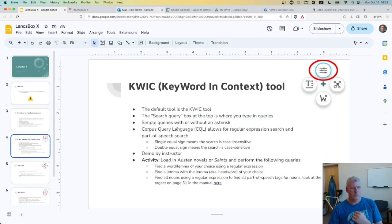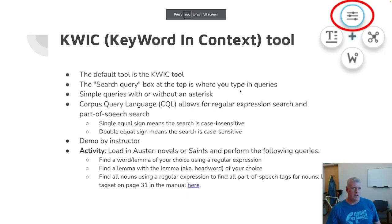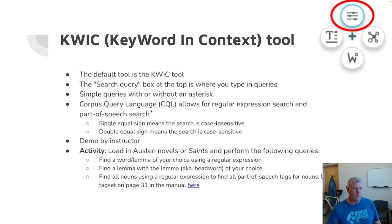Now we're ready to move on to the actual tools. The first tool is the keyword-in-context tool, or KWIC — however you want to pronounce it. This brings up concordance lines so we can look at specific words used in context. We're going to look at the search query box at the top of LancsBox. I'll show you a simple search with and without asterisks, then how to do a Corpus Query Language search — which is a powerful way to search using parts of speech, lemmas, and regular expressions — as well as case-sensitive and case-insensitive searches.